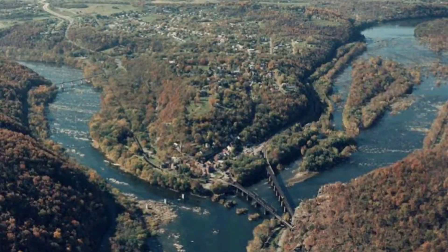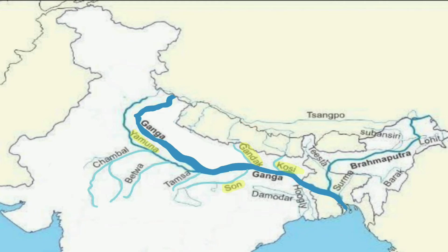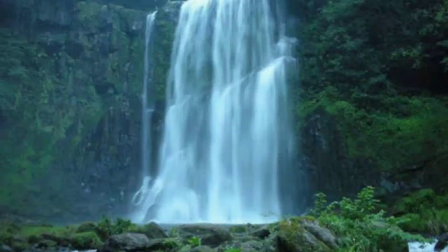For example, river Yamuna, Som, and Gomti are all called tributaries of river Ganga. In some places, a river cascades down or falls down a sudden drop — this forms a waterfall.